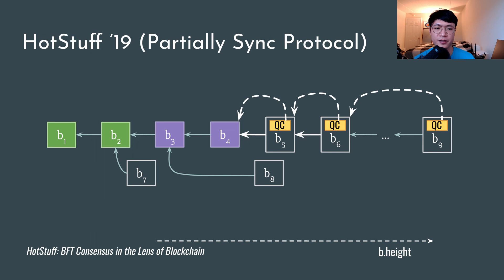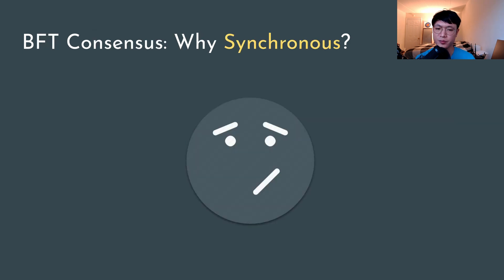The HotStuff protocol serves as a good example. It summarizes the known pipelined paradigm in BFT consensus and reduces both the algorithmic and programming complexity. It is the partially synchronous protocol used by the Libra project. That leads to our second big question: why do we need another synchronous protocol that has stronger network assumptions compared to asynchronous protocols like HoneyBadger and partially synchronous protocols like PBFT and HotStuff?